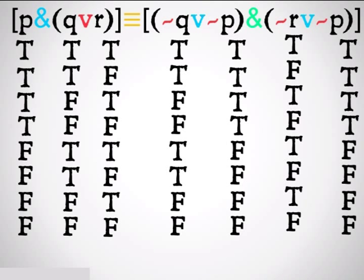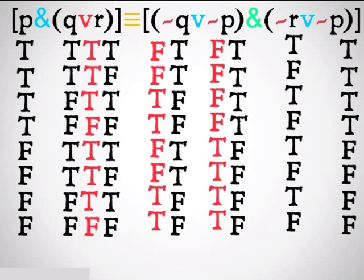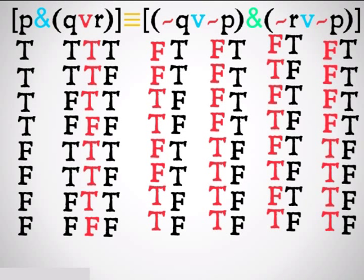We're going to start as far into the parentheses as we can — starting with all of the red operations. The first thing we're going to do is take a look at this V, this disjunction on the left. The only two times it's going to be false are when the two propositions next to it, Q and R, are both false — so two cases where it's false, and in all other cases it's true. Now we just go down and do all of the negations, because we do negations before the disjunction that's next to those propositions. Negations aren't hard — it's just going to be the opposite of whatever the truth table was before for that proposition.